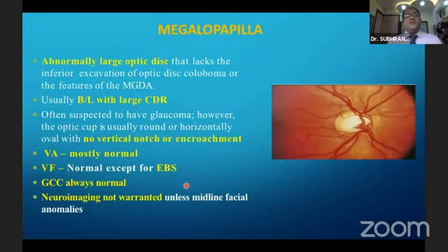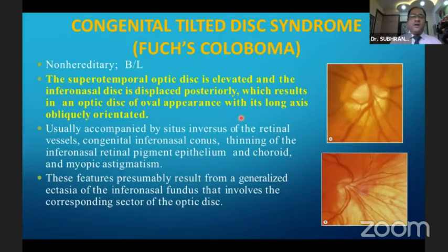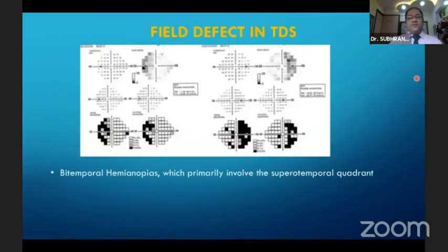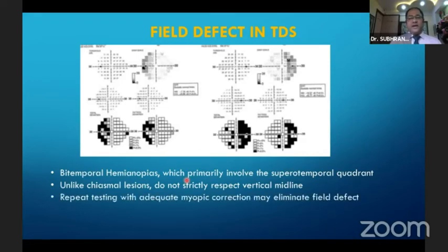Megalopapilla is an abnormally large optic disc; importantly, visual acuity is mostly normal, there is no vertical notching, and while RNFL thinning may be present, the ganglion cell complex thickness is always normal. We may also come across the congenital tilted disc syndrome, where the superotemporal optic disc is elevated and the inferonasal disc is displaced posteriorly, giving an oval appearance with an obliquely oriented long axis. Visual field defects are important here — we do get bitemporal hemianopias involving the supranasal quadrant, but unlike chiasmal lesions, these do not strictly respect the vertical midline, and repeat testing with adequate refractive correction may eliminate the field defects.